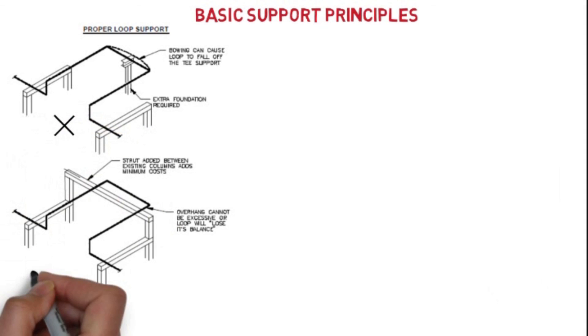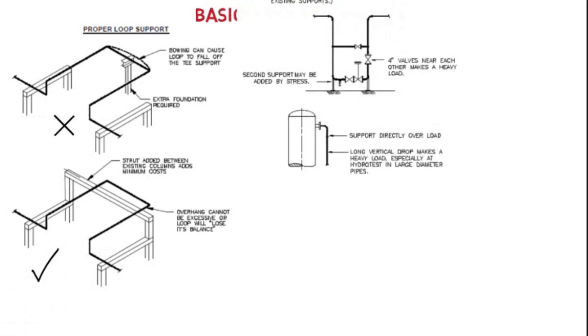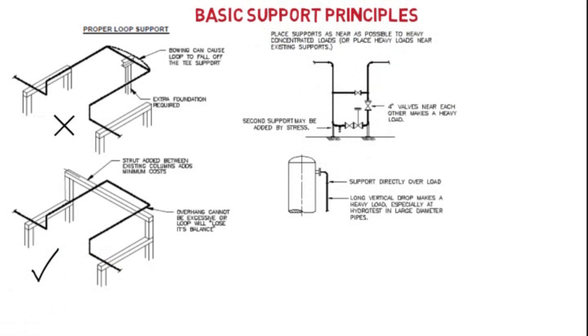We have to place the support as near as possible to the heavy or concentrated load, or else we can do one thing: we can provide the heavy load near the existing support. When we are doing column piping, we have to provide the support as near as possible to the nozzle.